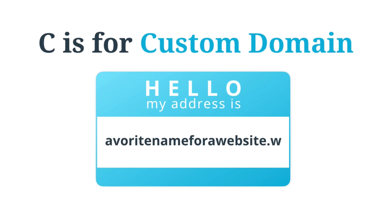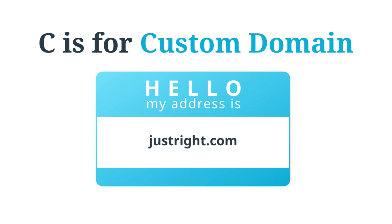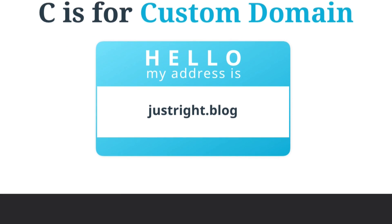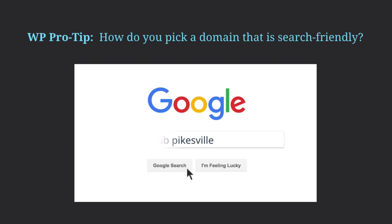C is for Custom Domain. A web address can be as long and as hard to spell as the Mississippi River, or it can be something short, simple, and memorable. Many of the good .com web addresses have already been taken, but there's a new alternative to .com called .blog that still has many available options. It's easy to connect the custom domain name of your choice at any time to your website. If the name of your business is a common one and there's a lot of competition out there, think of how someone might search for your business. Find the set of words that has fewer Google search results. For example, if Fox Pub has 33 million results on Google, versus Blue Fox Pub with 8 million results, versus Blue Fox Pub Pikesville with less than 80,000 results, the latter might be the best custom domain name to use.